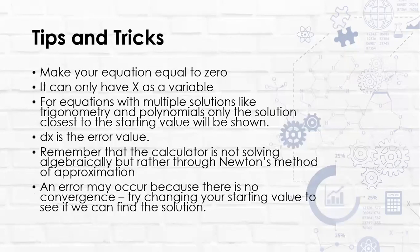So before we begin, some tips and tricks. Firstly, make sure that your equation is equal to zero. You cannot enter an equation with both sides with expressions, so you need to make sure one side has your expression and the other side is equal to zero. You can only use x as a variable, so if you have another variable you need to substitute x as that variable. You cannot have two variables, you can only solve for one variable.